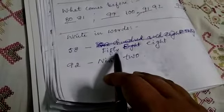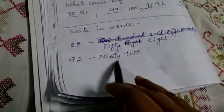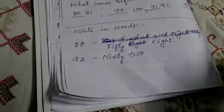58: f-i-f-t-y e-i-g-h-t, fifty-eight. 92: n-i-n-e-t-y t-w-o, ninety-two. Write all these things in your copies.